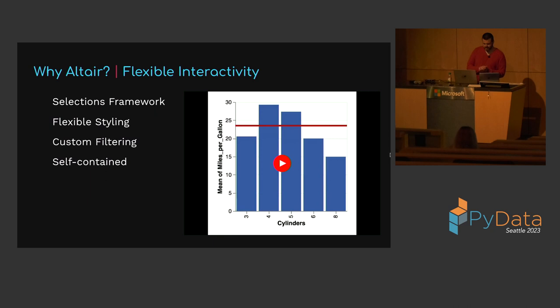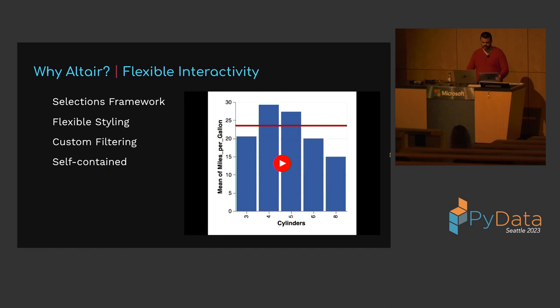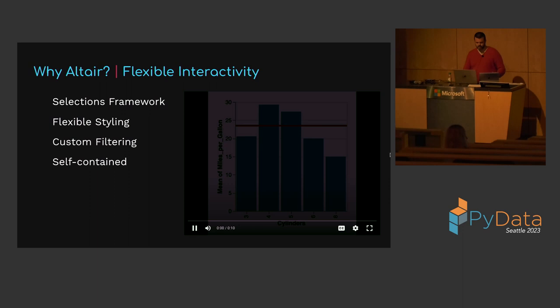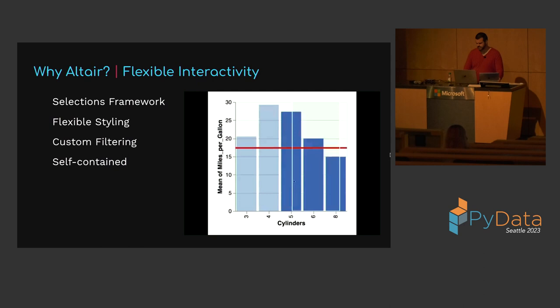Altair includes an expressive selections framework which can be used to build up sophisticated interactive charts. You have full control over how selections affect the visual appearance of marks and how they filter the underlying data. Selections are part of the chart specification itself, so the interactive behavior is self-contained and doesn't require a running Python kernel. This means interactive charts work in saved notebooks and when charts are embedded in websites without Python.